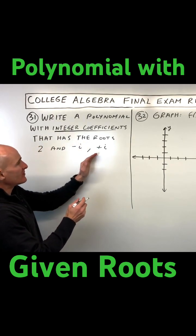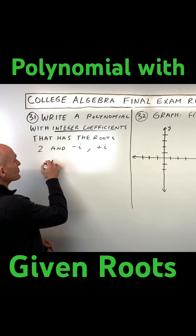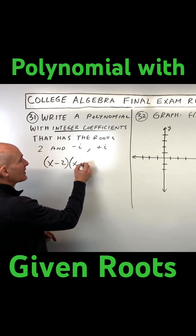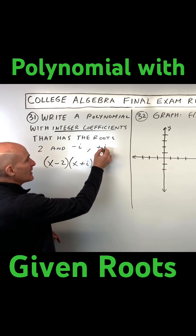And then when you are given the zeros, the factors are going to be x minus the zeros. So we have x minus negative i, which is x plus i, and x minus i.